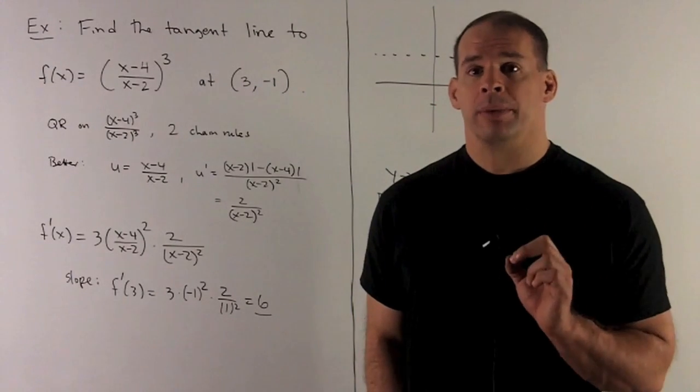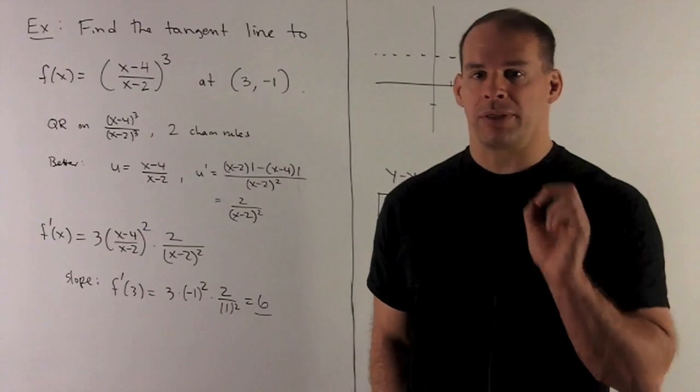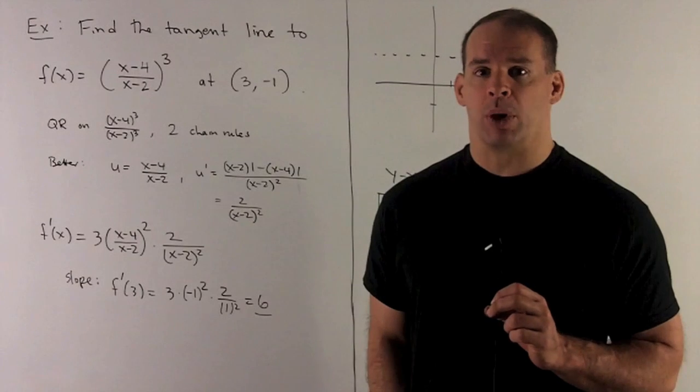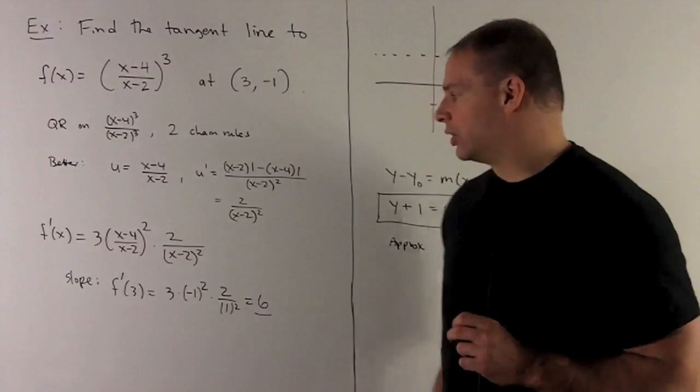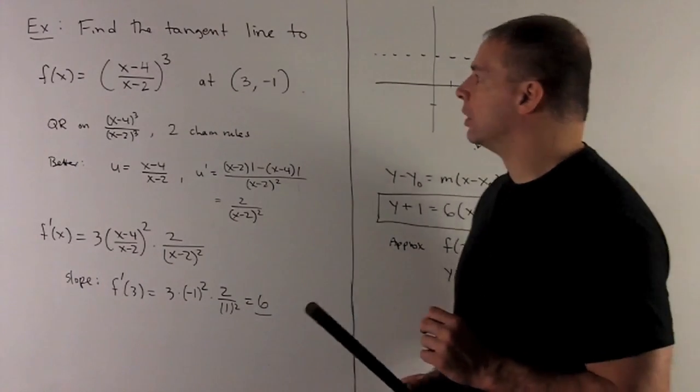Okay, derivative of our u cubed. It's just going to be bringing the 3 down, subtract 1 off the exponent. It's going to be 3. Put our inside back in, u squared, times u prime, which is this.